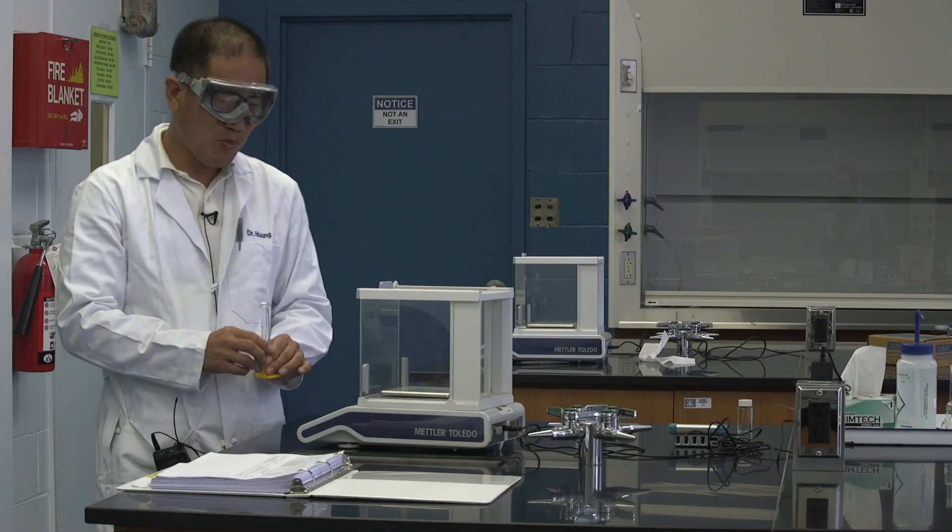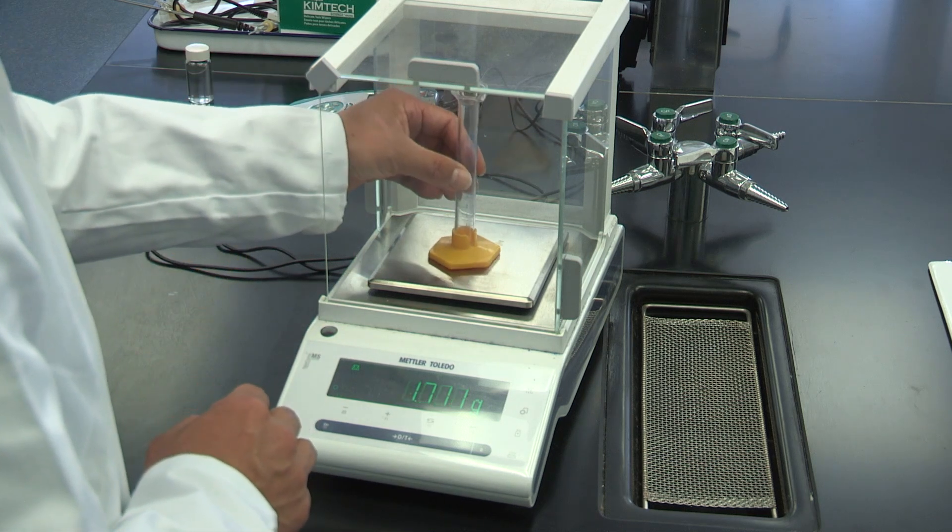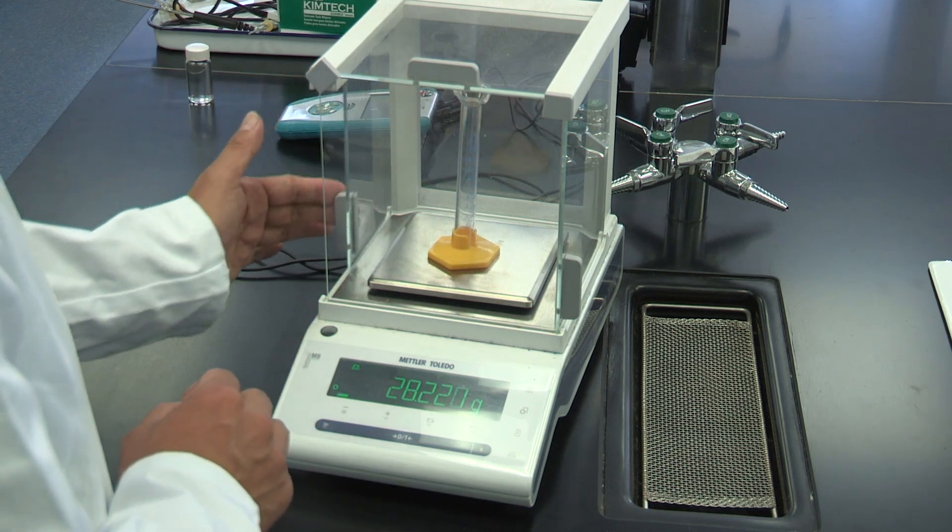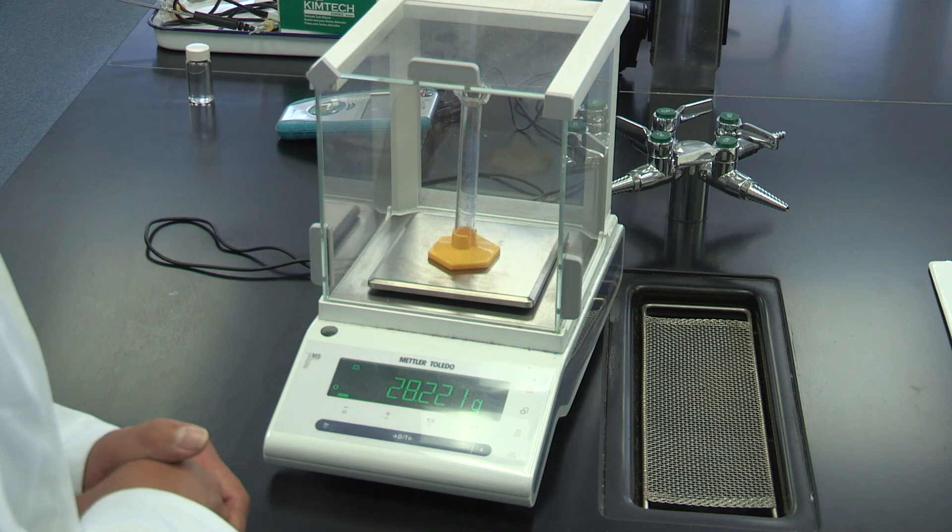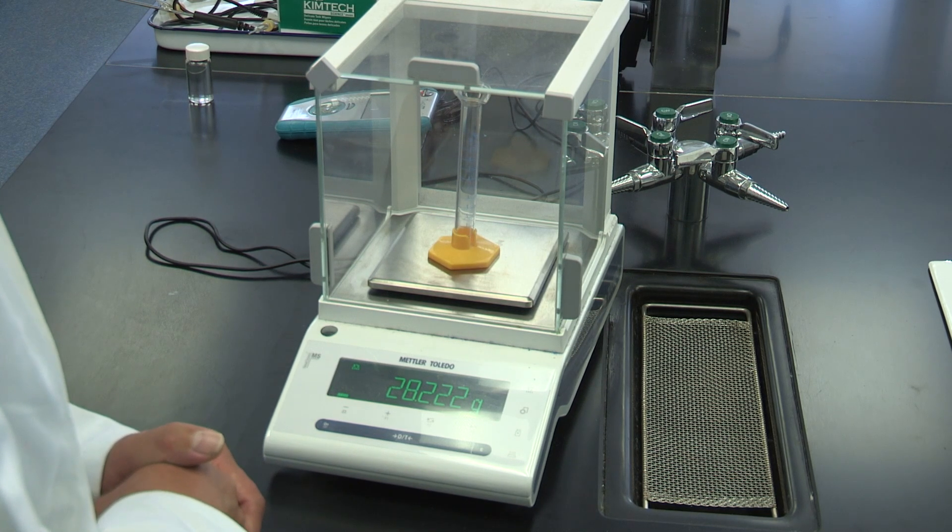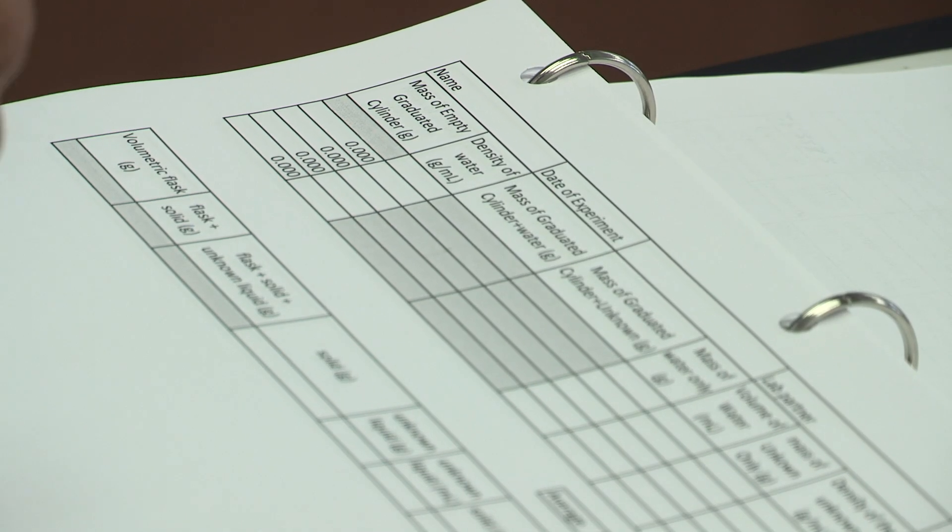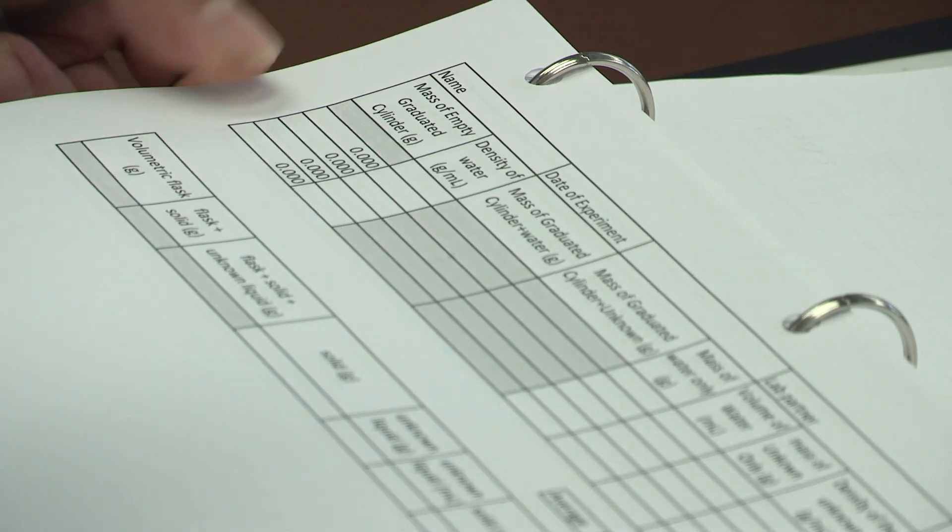We can open the side door and then put the graduated cylinder inside. And then close the door. Let's take the reading. It's 28.222 grams. Whenever you get the reading, you need to immediately write it down with a pen.